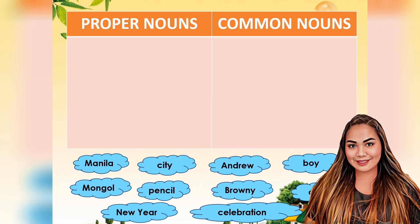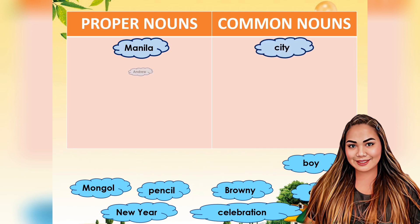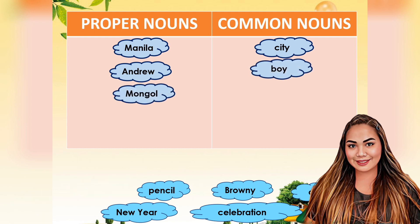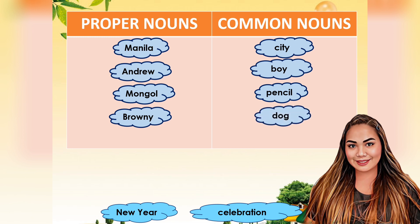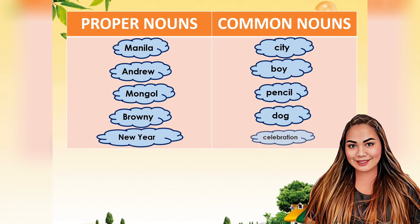Let us classify these words according to their category. Manila — proper noun. Andrew — proper noun. Boy — common noun. Mongol, Pencil — common nouns. Brownie — proper noun. Dog — common noun. New Year — proper noun. Celebration — common noun.